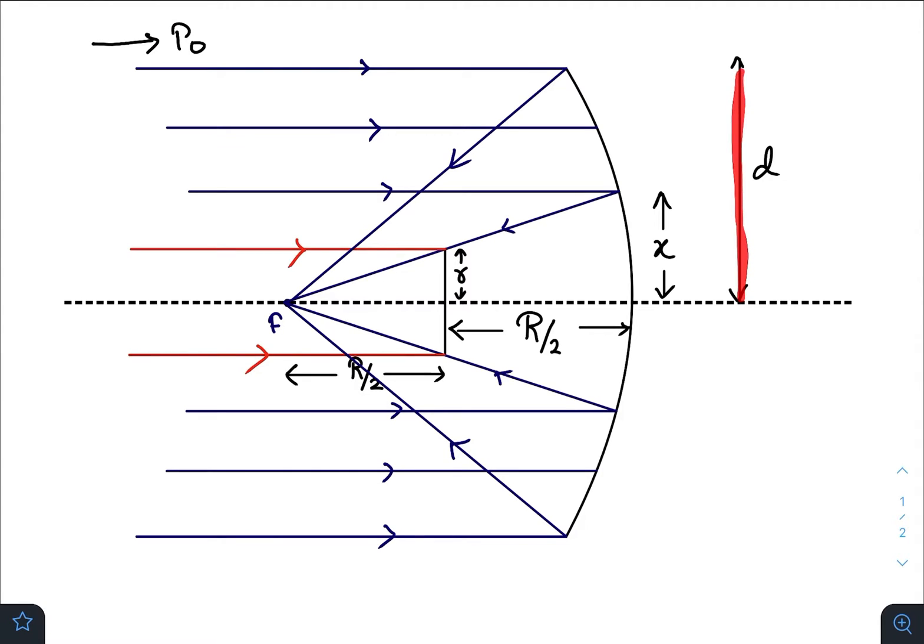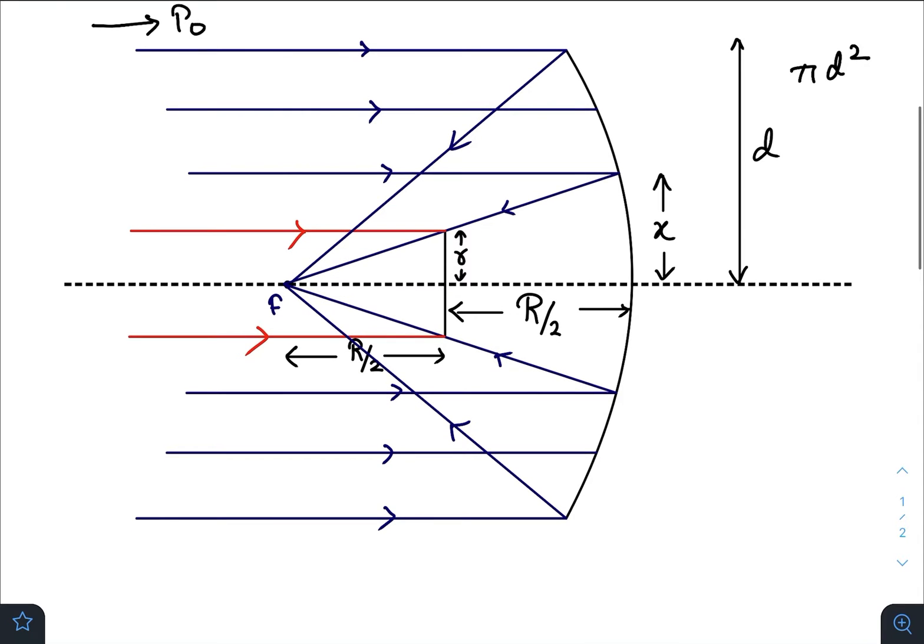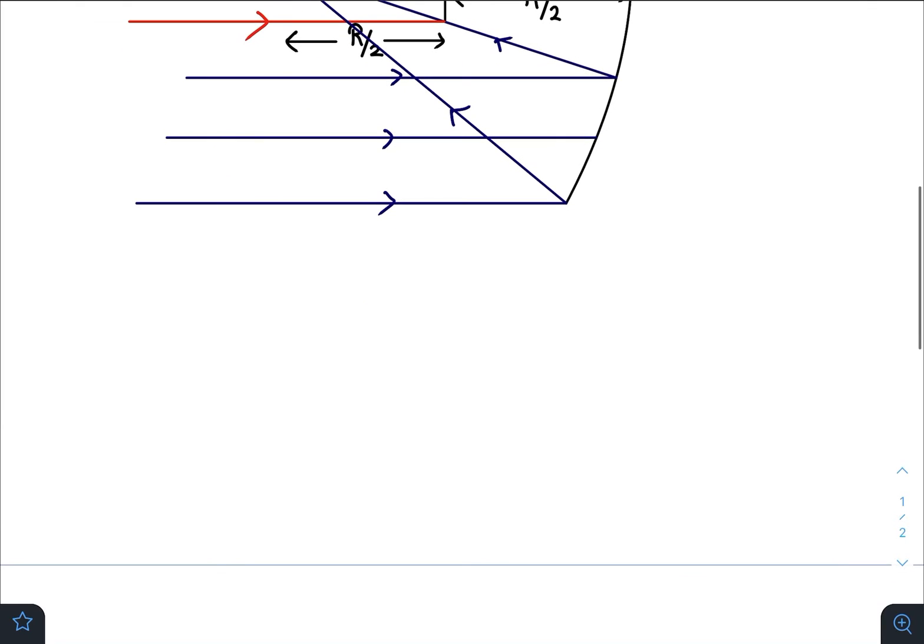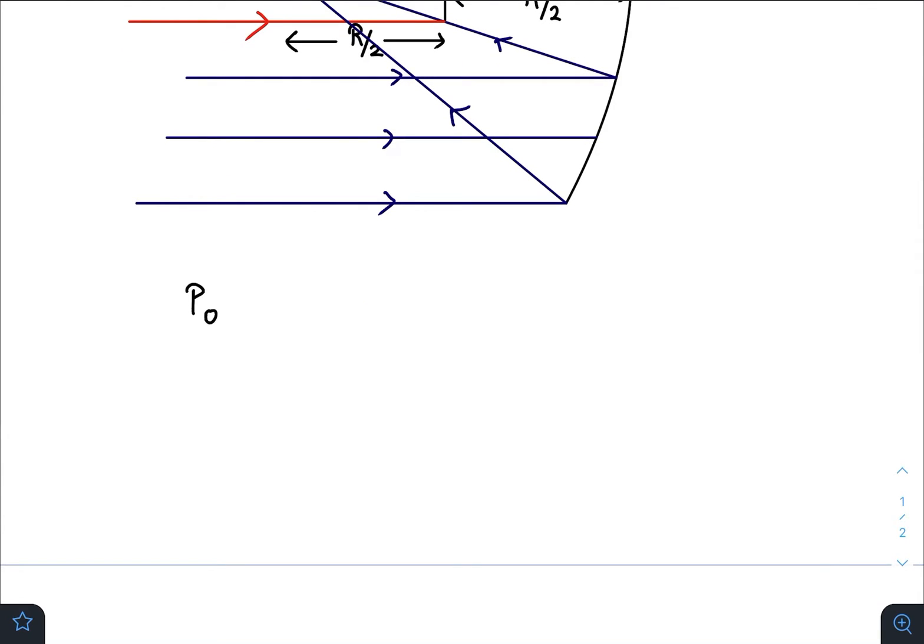This P naught amount of power is incident in a cross sectional area of pi d square. Out of that pi d square cross sectional area, the opaque disc has cross sectional area pi small r square.